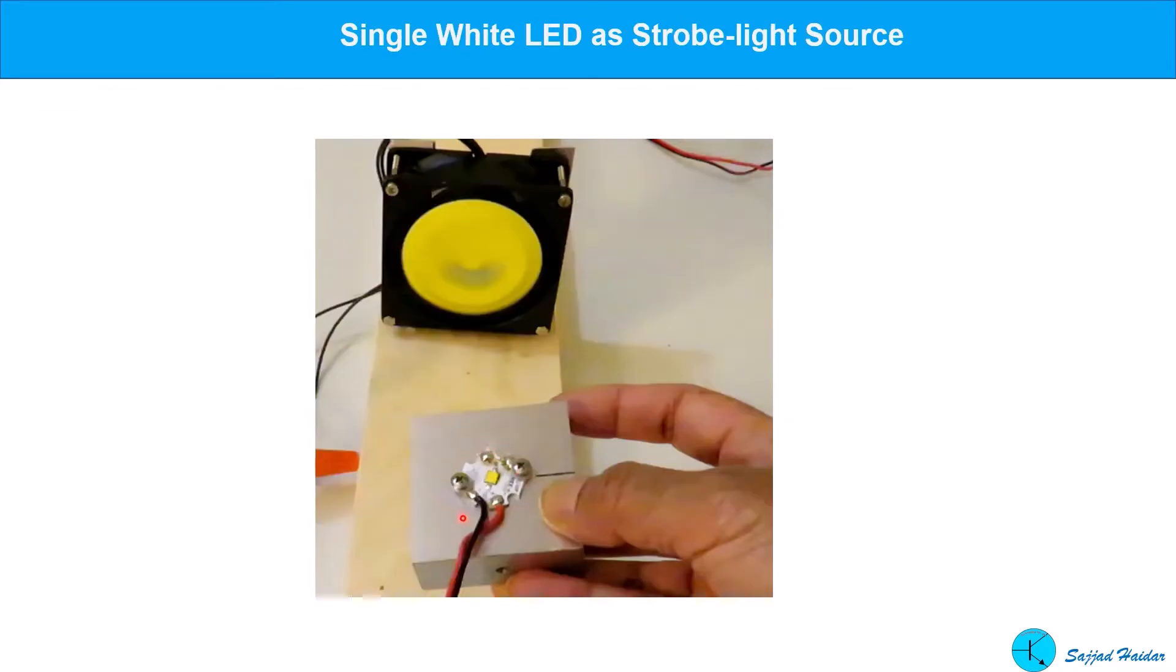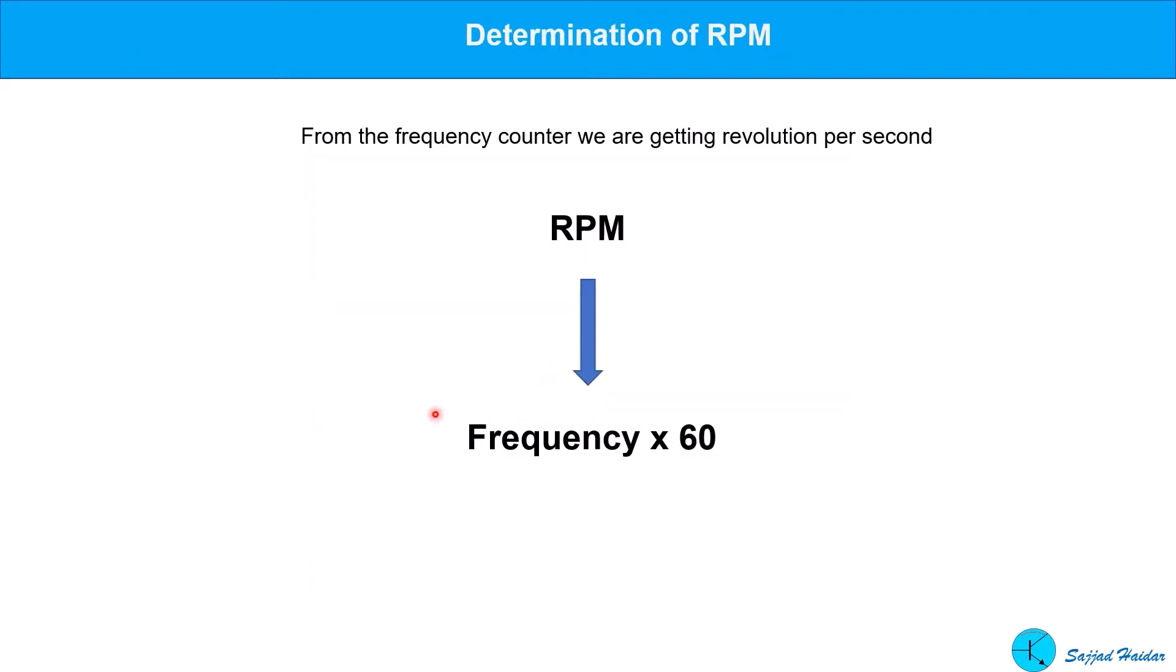The white LED is screwed on a metal aluminum base for heat sinking. From the frequency count, we can easily find the RPM of the rotating object by multiplying by 60.